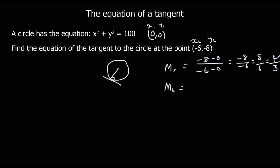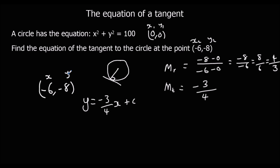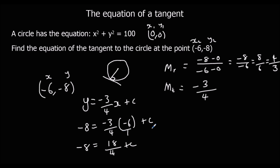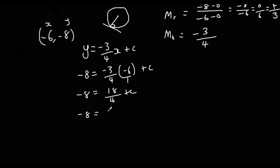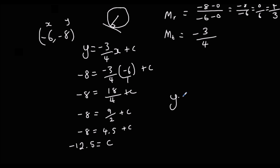The gradient of the tangent is perpendicular, so we flip and change the sign: -3/4. Using y = -3/4 x + c and substituting the point (-6, -8): -8 equals -3/4 times -6 plus c. That gives -8 equals 18/4 plus c, which simplifies to -8 equals 4.5 plus c. Taking away 4.5 from both sides gives c = -12.5. So the equation of the tangent is y equals -3/4 x minus 12.5.